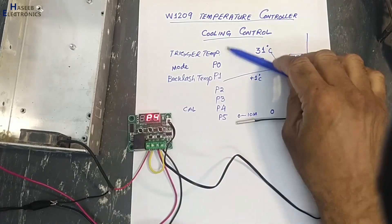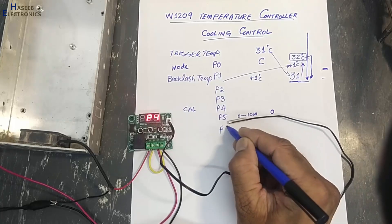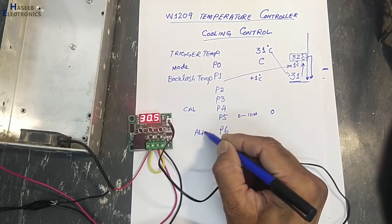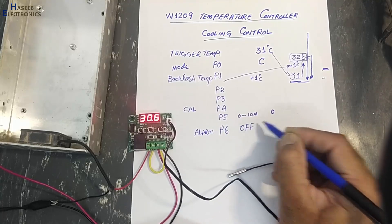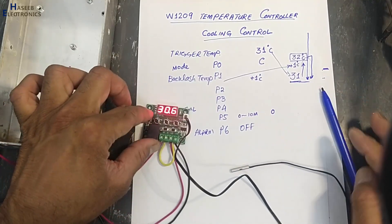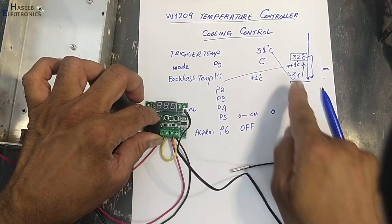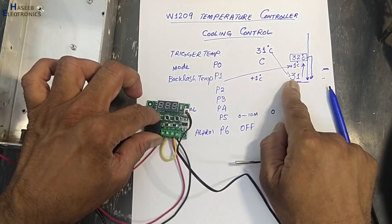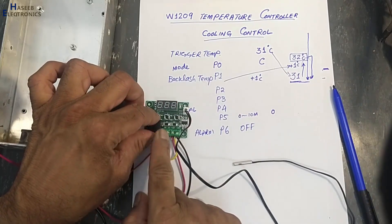Set the correction back to 0.5 and press Set. If you want to increase the reading add a positive value. Then P6 is the alarm — set it to off.